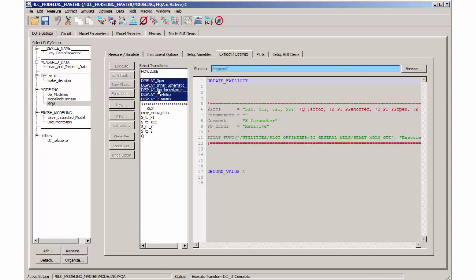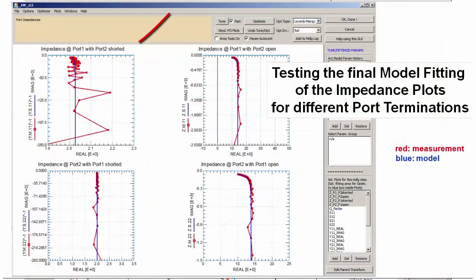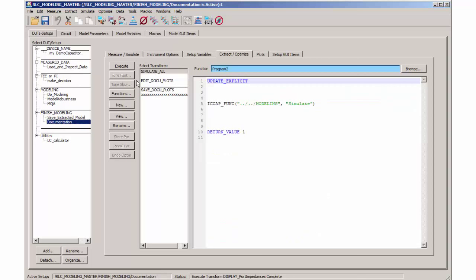Among other tests, we can check the fitting of the model for different port terminations. For instance, looking into port 1 with port 2 shorted. Looking again into port 1, but now port 2 open. Looking into the opposite port 2, now with port 1 shorted, and again into port 2 with port 1 open. With all checks performed and succeeded, I am saving the model and also the different fitting plots for documentation.